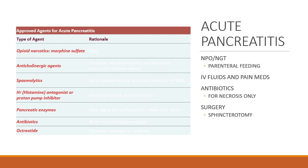Management of acute pancreatitis includes NPO, NG tube, and parenteral feeding — TPN or PPN — to let the gut rest and stop anything that stimulates the pancreas to secrete. IV fluids are really important, as are pain medications — opioid narcotics such as morphine, fentanyl, or Dilaudid are all fine. Antibiotics are only used if the patient has necrosis; without a necrotic area, antibiotics won't help because pancreatitis is usually a chemical inflammatory problem, not an infectious one.